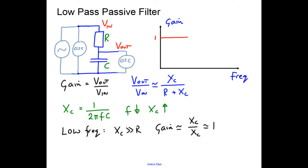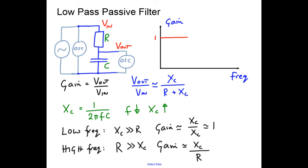What about at high frequencies? At high frequencies, the reactance of the capacitor is now very small — the resistor is much greater than the reactance. So the gain is approximately Xc on the top, but on the bottom of the equation we only need to write R. So the gain is approximately some function of the reactance, meaning as the frequency goes up, the gain is going to get smaller. So at low frequencies the gain is approximately constant at 1, and at high frequencies the gain is reducing.